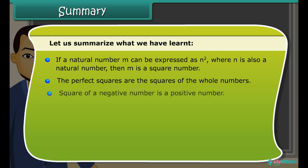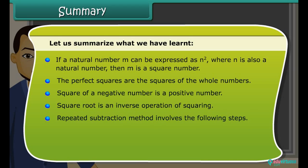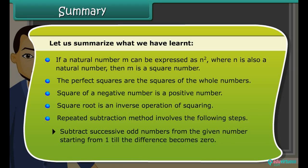Square root is an inverse operation of squaring. Repeated subtraction method involves subtracting successive odd numbers from the given number starting from 1 till the difference becomes 0, then counting the number of steps it took.